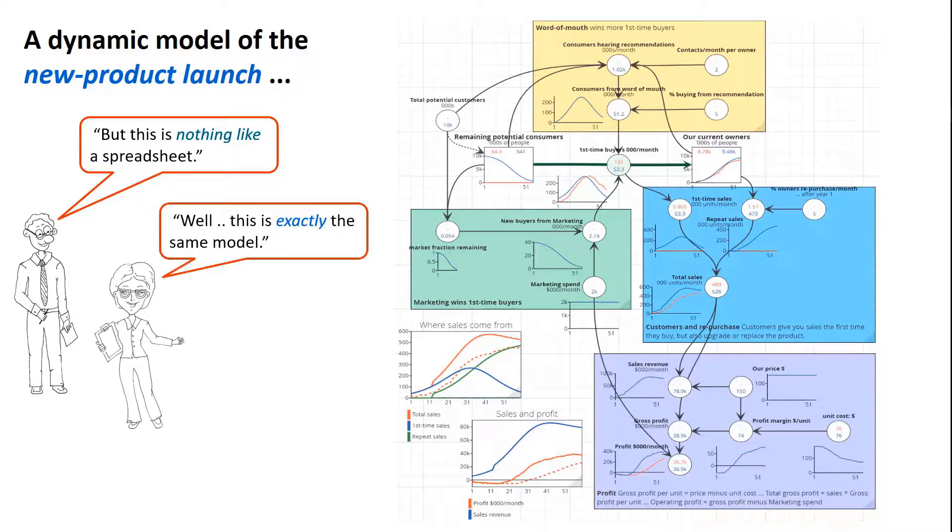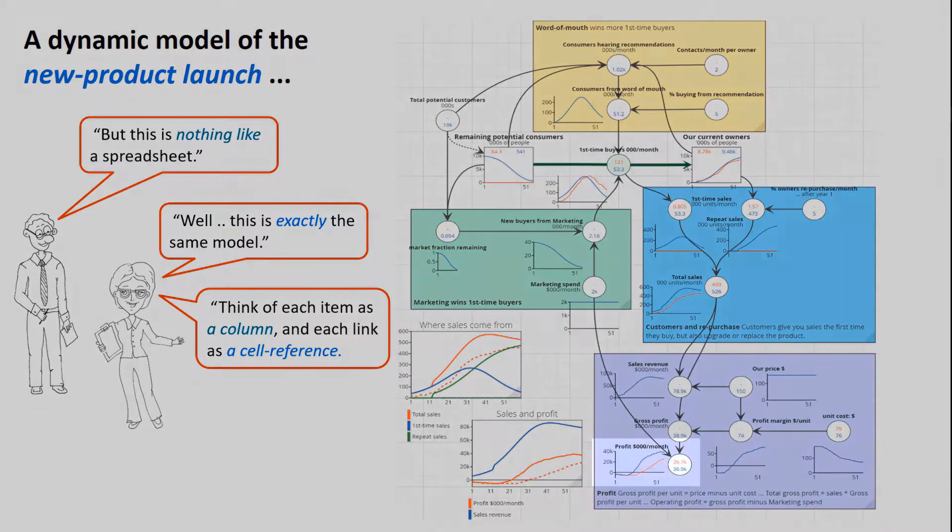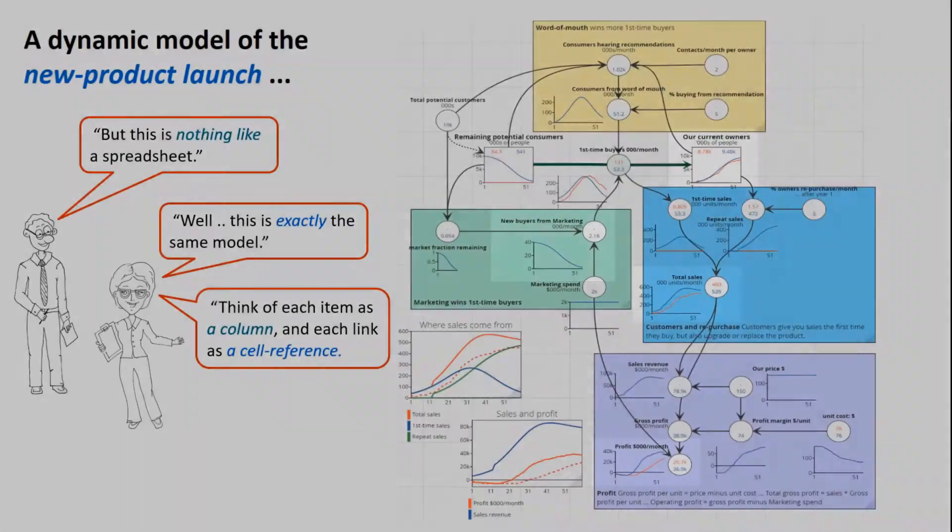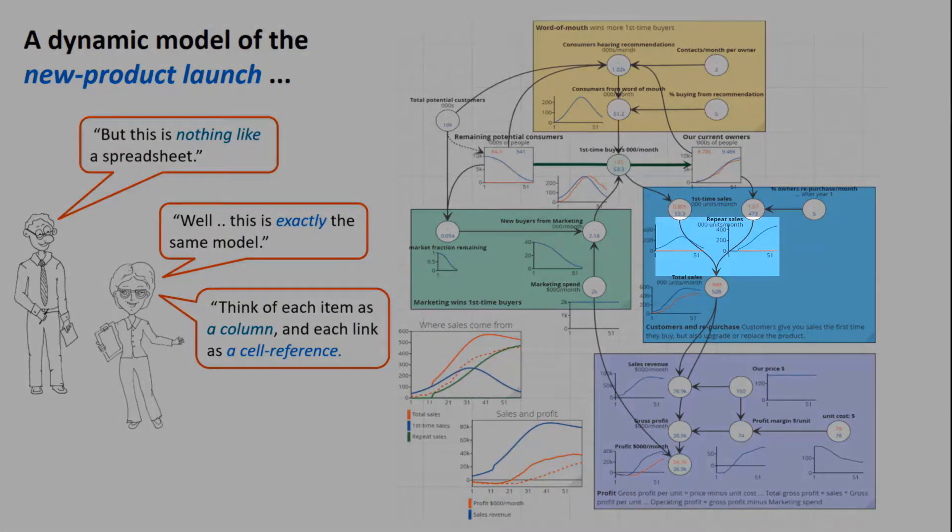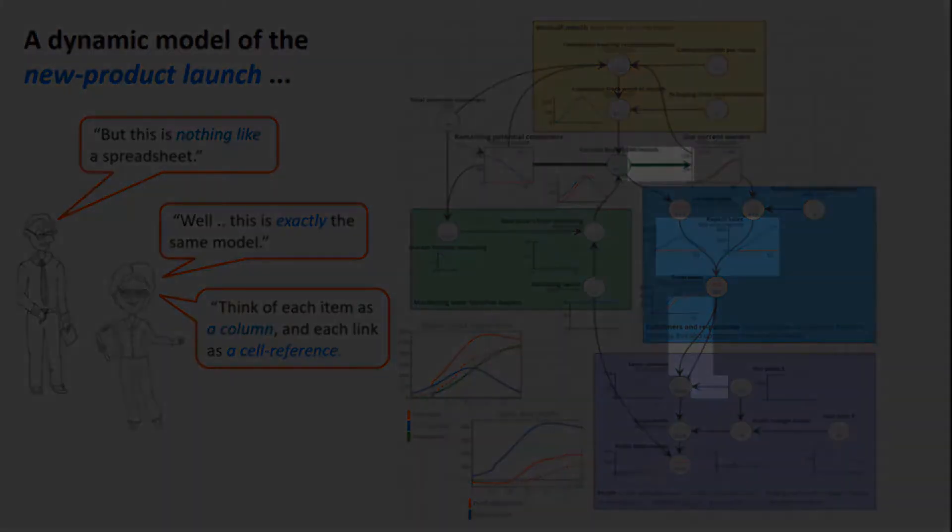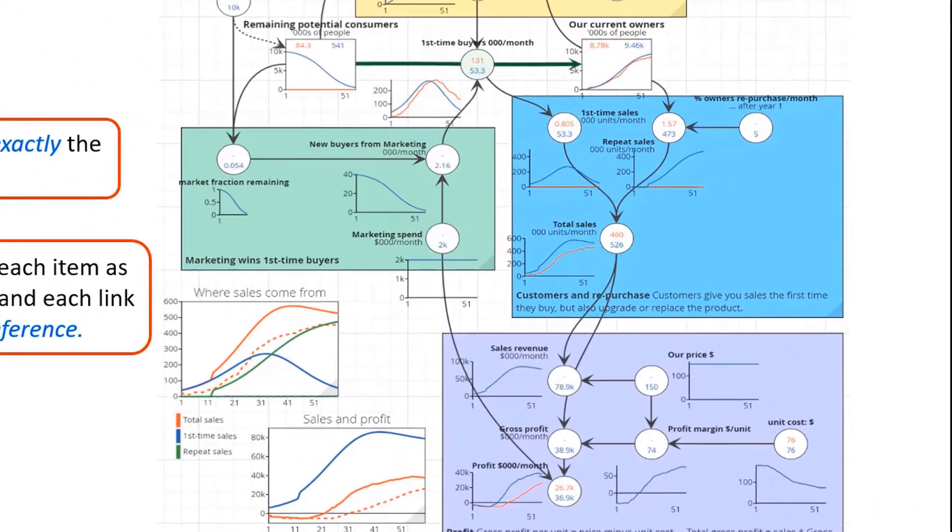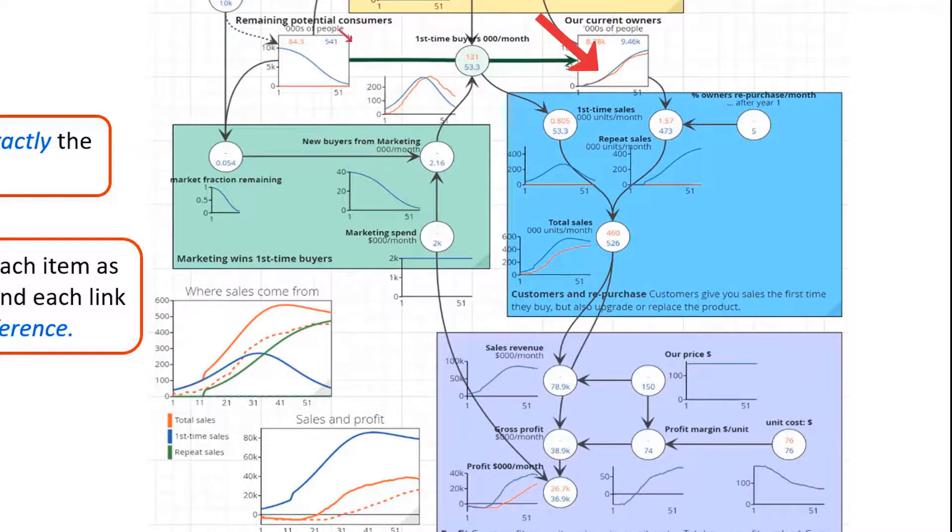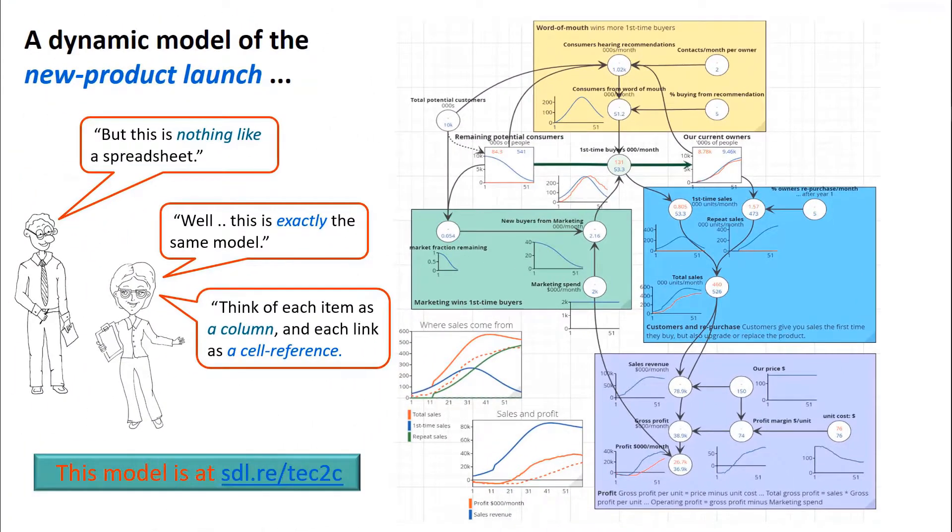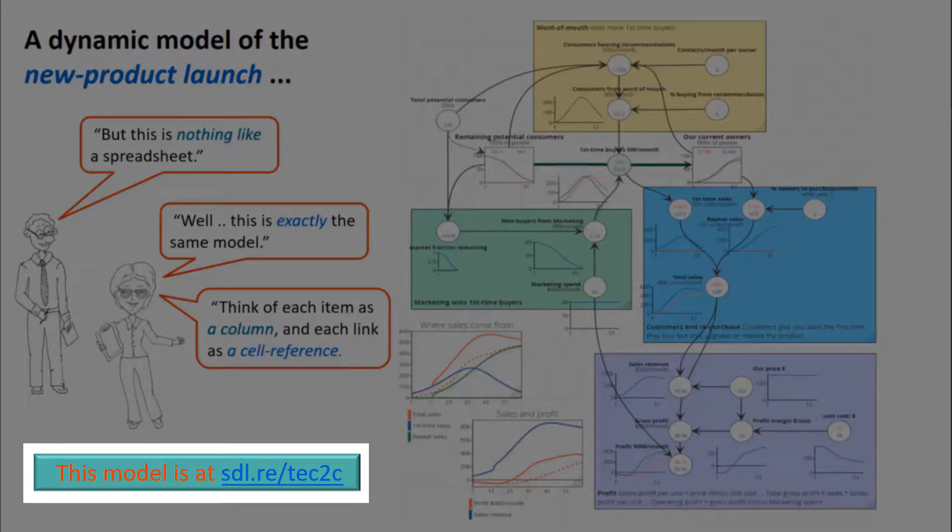Alan's friend explains that actually this is exactly the same model. Think of each item on this picture as being one of those columns in the spreadsheet, and the link arrows are like the cell references that tell you what to calculate from what else. But there's a lot more intuitive information here—you can see how all the values of all the variables are changing over time. You can get this model from sdl.re slash tech2c.